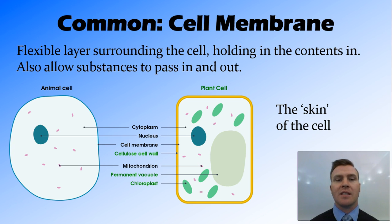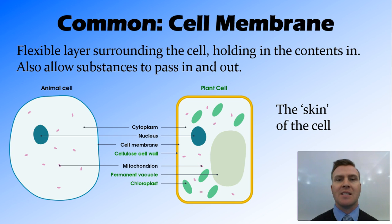Starting with organelles common to both plant and animal cells: the cell membrane. This is a layer that surrounds the cell, holds all the contents of the cell in, and keeps things outside the cell out. It is semi-permeable, meaning that things can pass in and out of it, but not everything does. You can think of the cell membrane as the skin surrounding the cell.